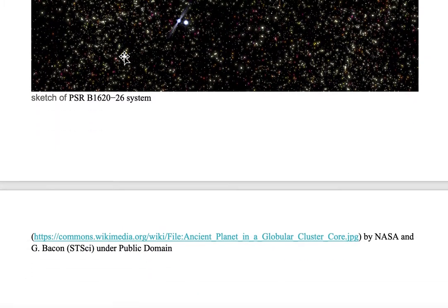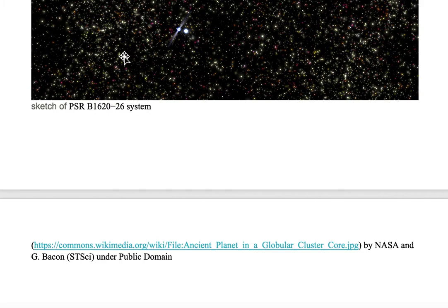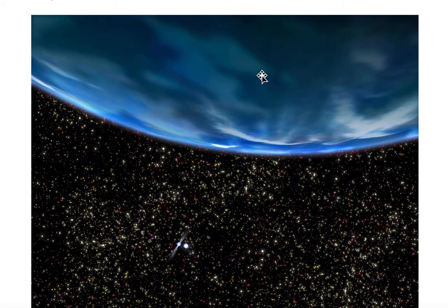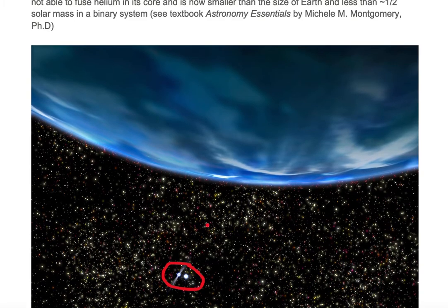Here we're looking at a sketch of the B1620-26 system. It contains this very large blue exoplanet and it's in a binary with a neutron star on the left and our helium white dwarf on the right.